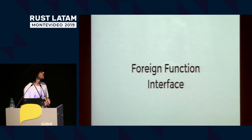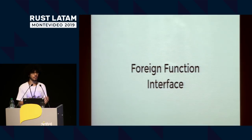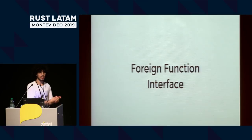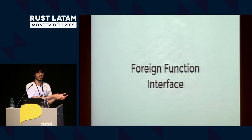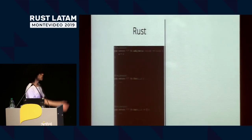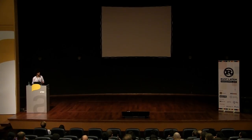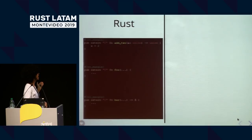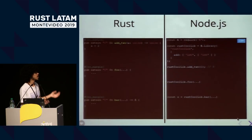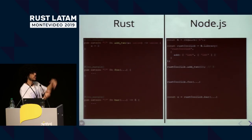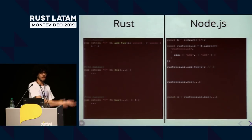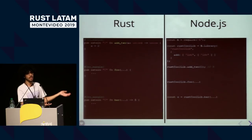FFI stands for foreign function interface. Basically, a programming language has its standard library, its syntax, and one of the things the most popular ones have is a way to talk to the external world. So, let's say you've created some awesome Rust functions and you want to use them in a Node.js app or whatever — you can create your program and consume them via FFI. Rust has a way to externalize things and also consume things from the external world. Other languages have that feature too.